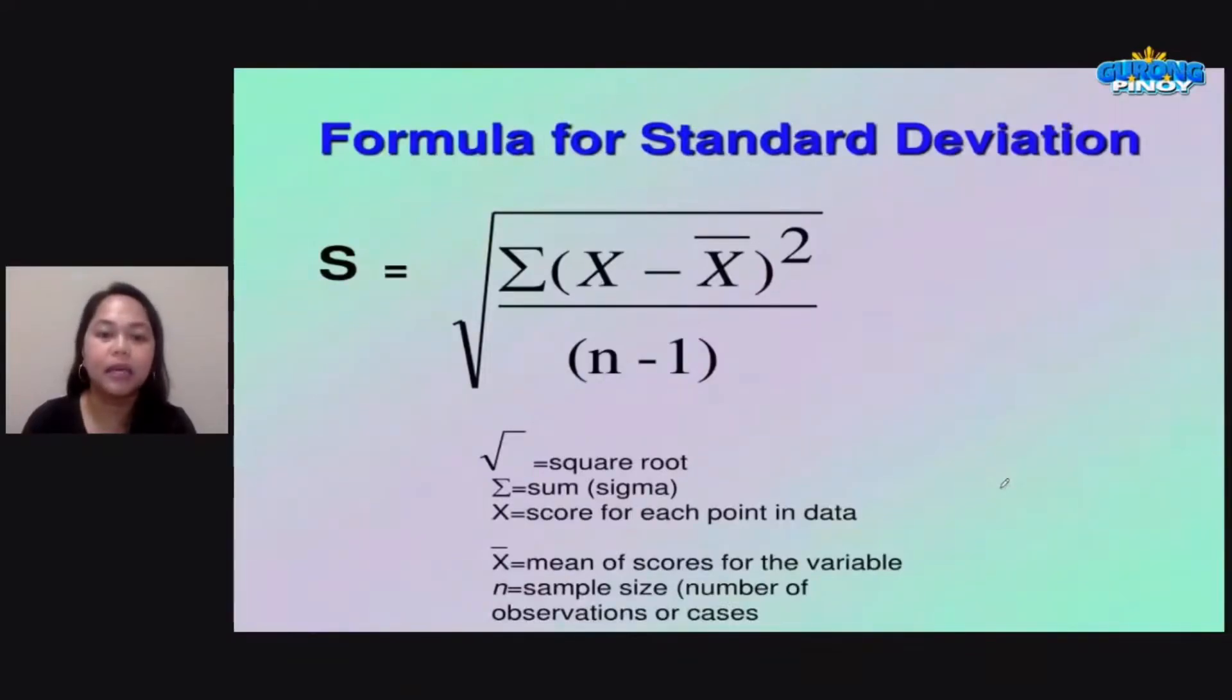Standard deviation is taken by getting the square root of the summation of x, that's the score, minus the mean, the average, and this quantity is squared. This all over n minus 1, where n would be the number of scores minus 1.